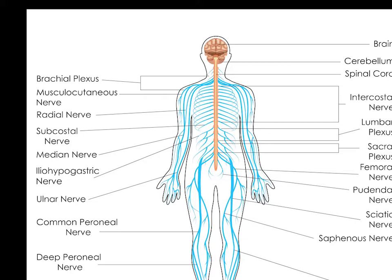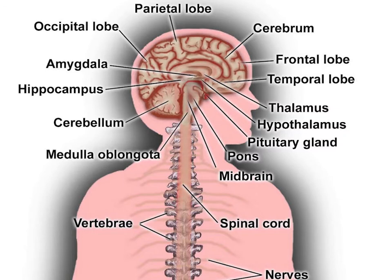The peripheral nervous system is a collective term for the nervous system structures that do not lie within the CNS. The large majority of the axon bundles called nerves are considered to belong to the PNS, even when the cell bodies of the neurons to which they belong reside within the brain or spinal cord.